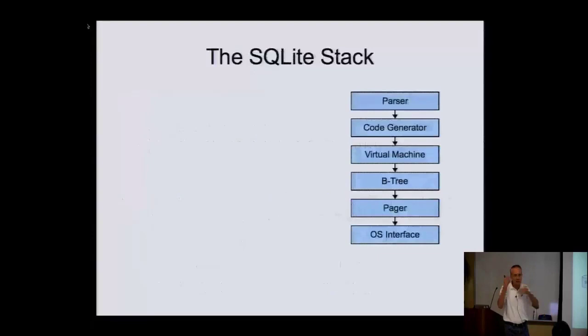This is the stack of SQLite: there's a parser, code generator, virtual machine, B-tree layer, pager, and an OS interface. I'm going to talk about each of these in turn.